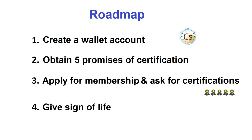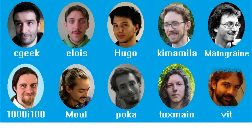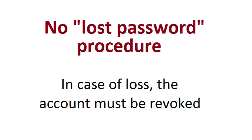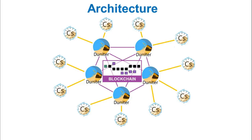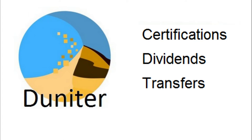There is no lost password service because there is no central authority — just an open group of volunteer developers and users. You are strictly the only person who can access your member account. If you lose your credentials, your Junés are permanently lost and you must revoke your account and restart the certification process. Cesium, the software you install, is an access point to the data of the Web of Trust and accounts. Another software called Junita records and validates certifications, updates and distributes dividends, and makes transfers from one account to another.